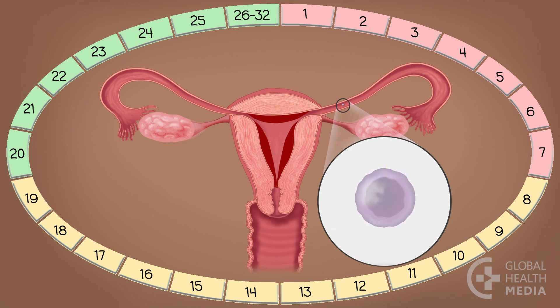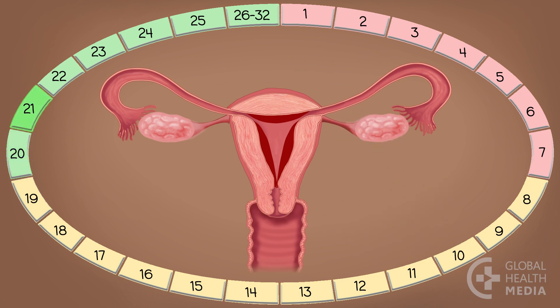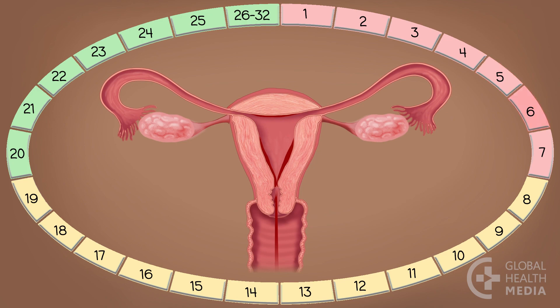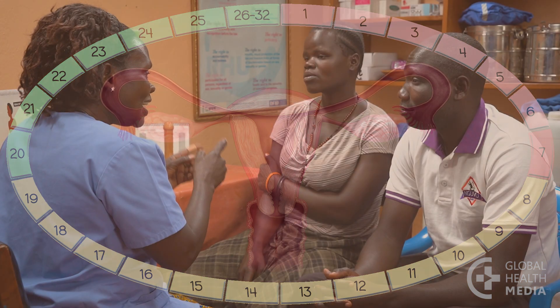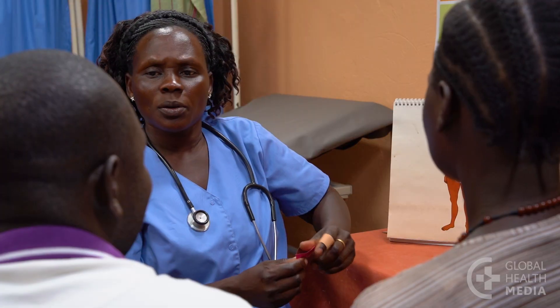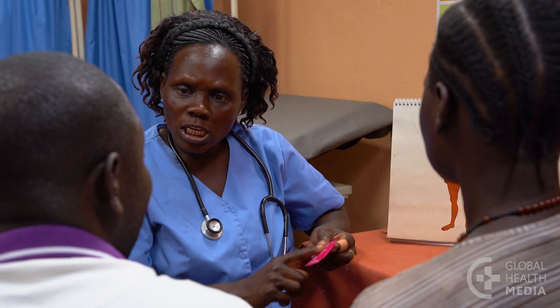If the sperm does not join the egg, the egg is reabsorbed by your body and you are no longer fertile. Then the lining in your uterus is not needed and you have your monthly bleeding. By tracking your cycle day by day and avoiding sex or using condoms during your fertile time, you can avoid getting pregnant.